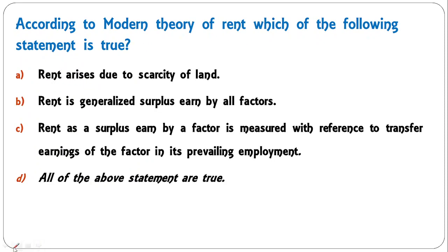According to the modern theory of rent, which statements are true? Rent arises due to scarcity of land — correct. Rent is a generalized surplus earned by all factors — correct. Rent as a surplus earned by a factor is measured with reference to transfer earnings of the factor in its prevailing employment — correct. All of the above statements are true, so D is the correct answer.